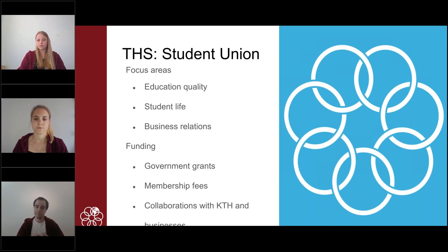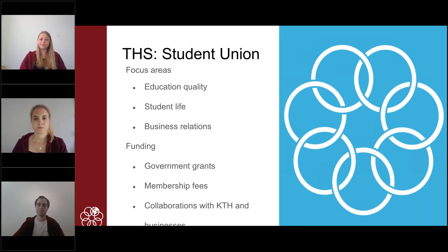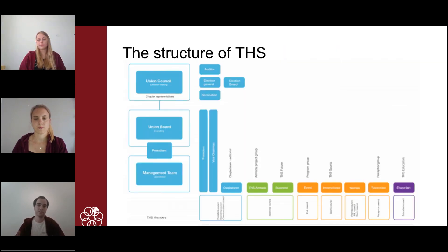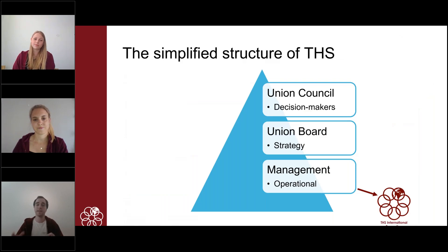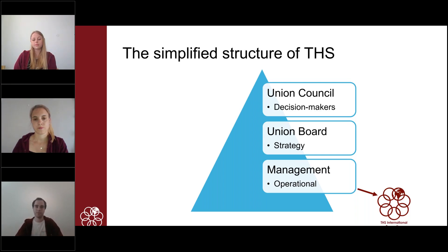We are a not-for-profit organization, so all the money that we get we reinvest into the students. We receive money in three main ways: the first is through government grants, the second is through membership fees — we have about 9,000 members — and finally we also have collaborations with KTH and different businesses to get more funding and invest in more activities for the students. The structure of THS is quite complicated, so we have tried to simplify it. At the top there is the union council, which is the decision maker. The union council elects the union board, which is the strategic guide of the organization and creates the operational plan.